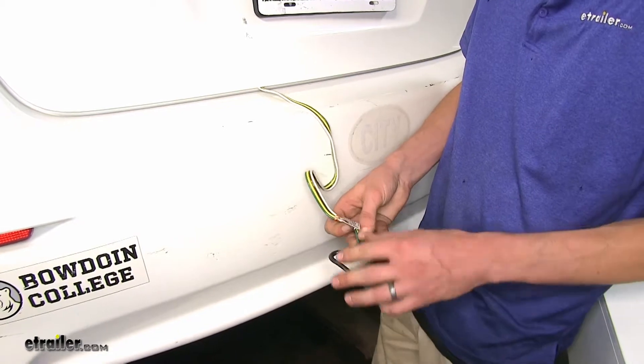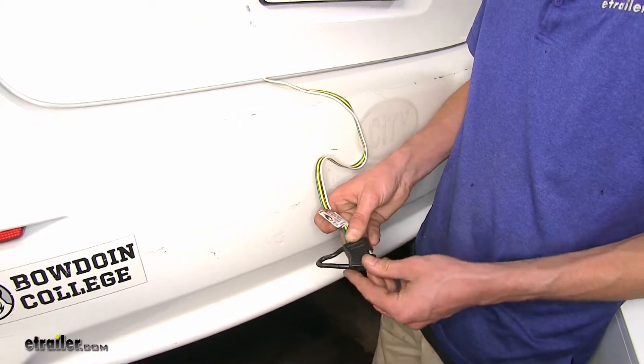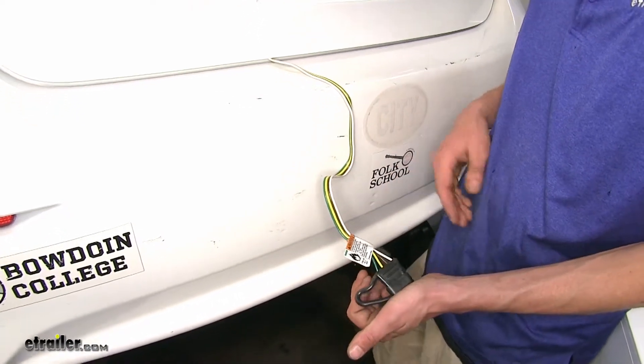You can tell it apart because the Tekonsha has a dust cover that's built on, whereas the Curt clicks into place and slides over the wires. Not a big deal. They both have a dust cover.